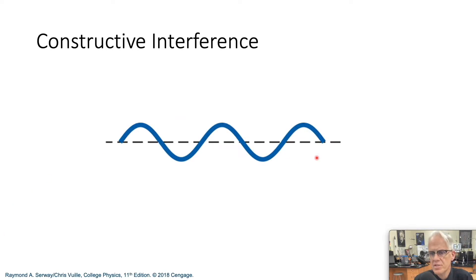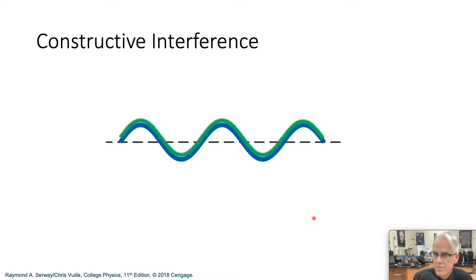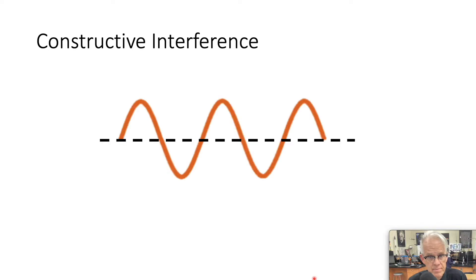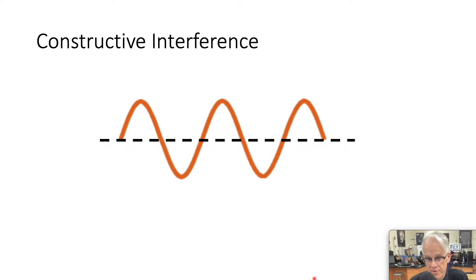If two waves having the same frequency and amplitude, like this blue one and this green one, are in phase, the resultant wave when they combine has the same frequency as the individual waves but twice their amplitude. These waves are said to be in phase and to exhibit constructive interference.